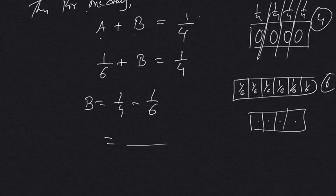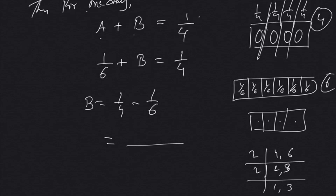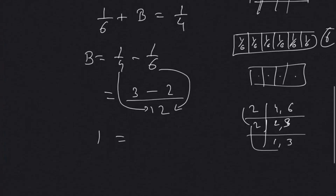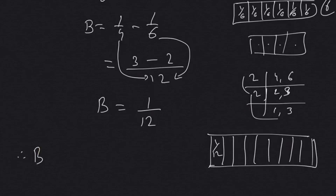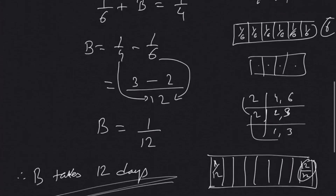Taking the LCM of 4 and 6: two twos are 4, two threes are 6, so LCM is 12. Therefore B = 3/12 − 2/12 = 1/12. That means in one day B can finish one-twelfth of the work, which means B takes 12 days to complete the full work. So B takes 12 days — a very simple question where we just find the fractional amount of work done.